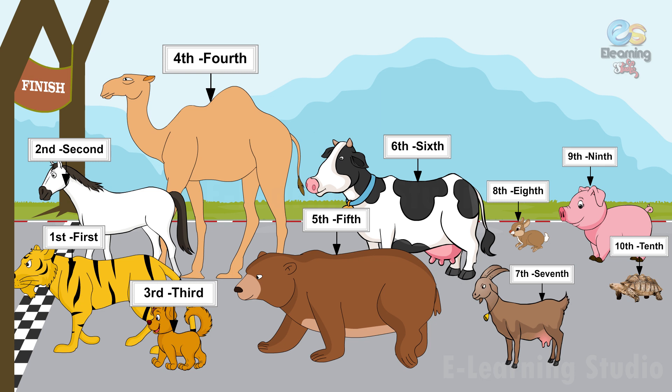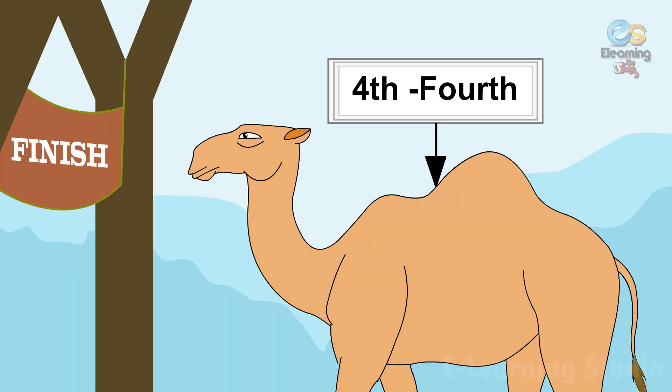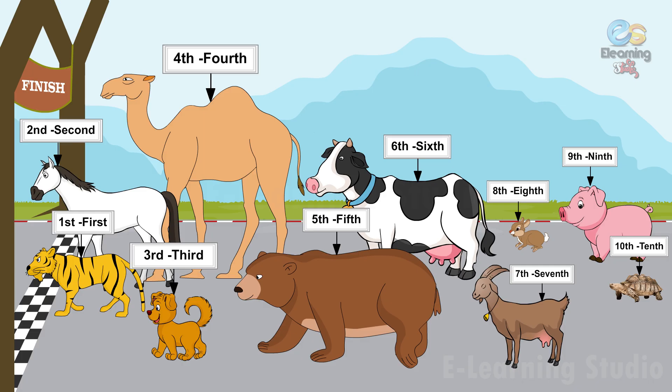Now children, can you tell me what is the position of camel? Yes, the camel is at the fourth position. An Ordinal Number tells the position of an item or things in a group.